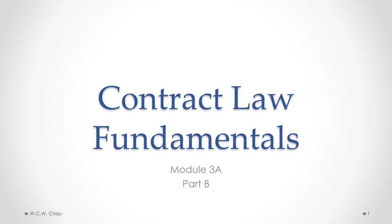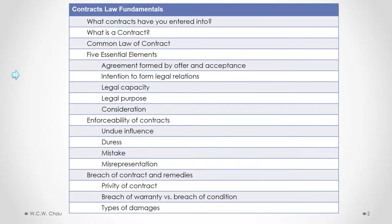This is Waylon Chow. Welcome to Contract Law Fundamentals, Module 3a Part B. In this part we will examine the remaining essential elements required for a binding contract: intention to form legal relations, legal capacity, legal purpose, and consideration.